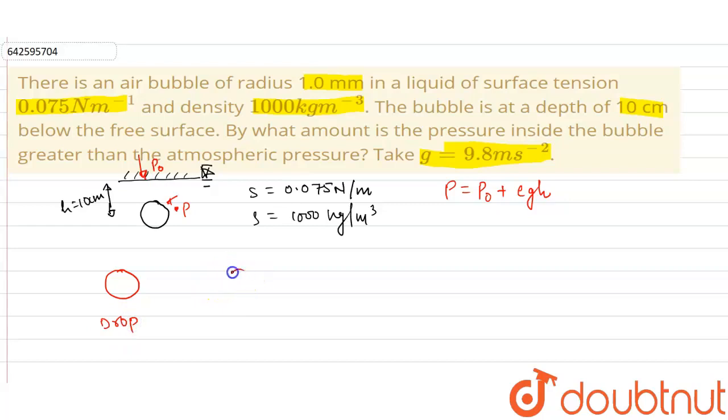In the case of a bubble, the outside is also air and inside is also air. But in the case of a drop, the outside is air and inside is water or liquid.